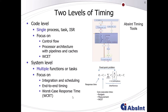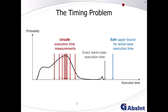To calculate that worst-case response time, the core execution times like the worst-case execution time must be known. Here I have a graph showing on the x-axis the execution time of one task running on a trivial single-core architecture, and on the y-axis the probability with which such an execution time may occur.